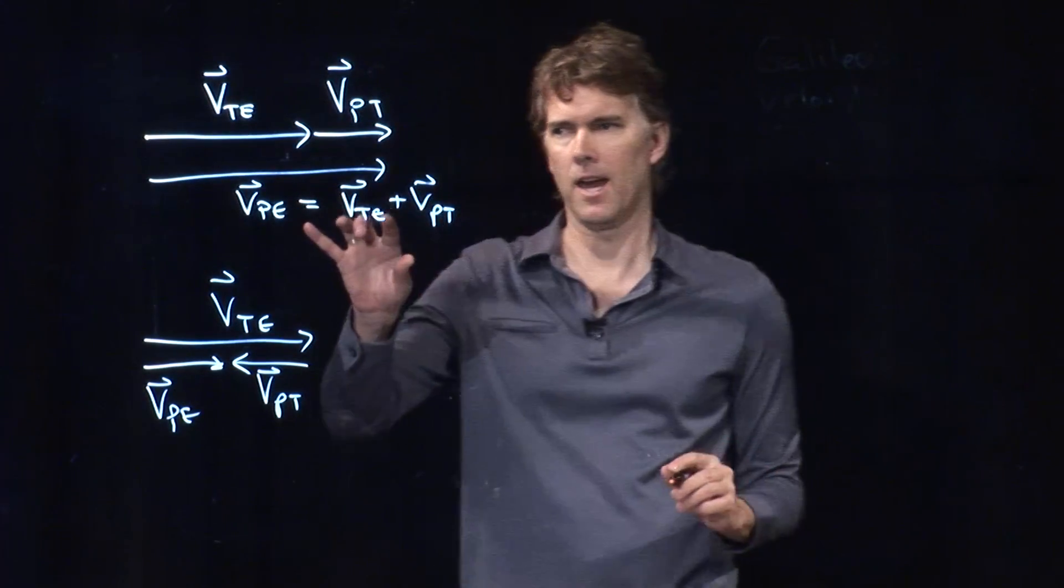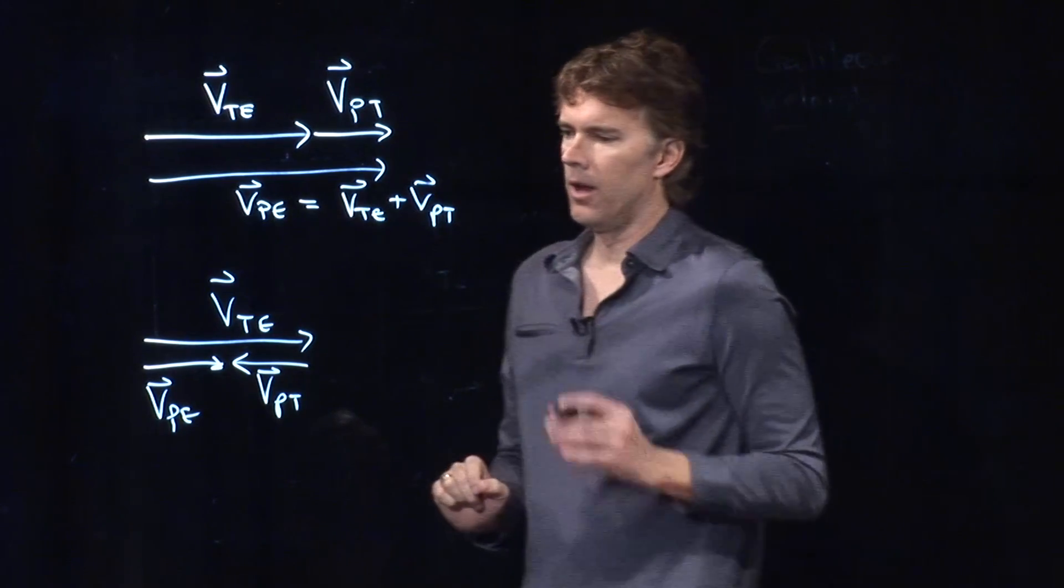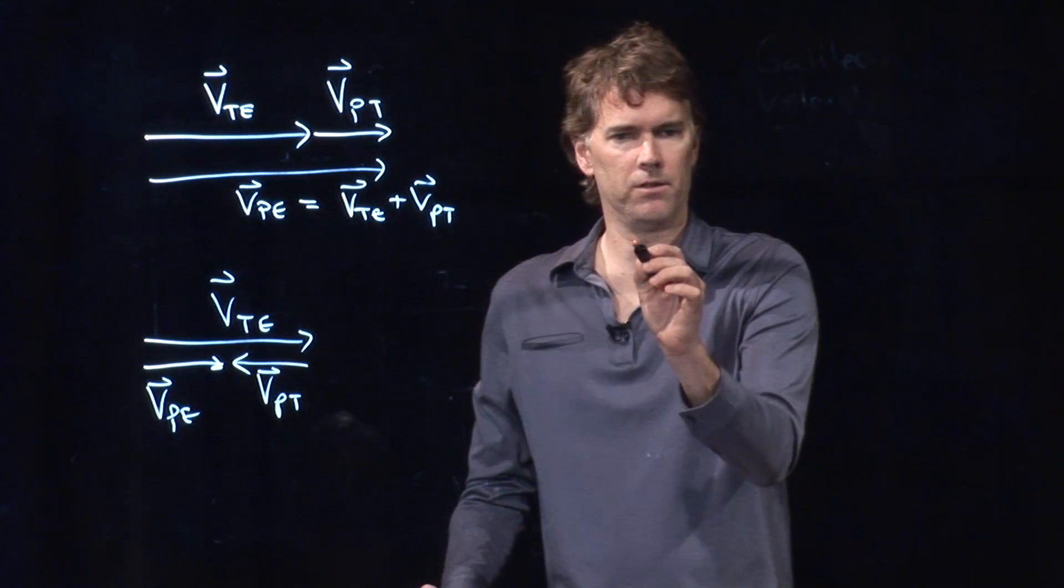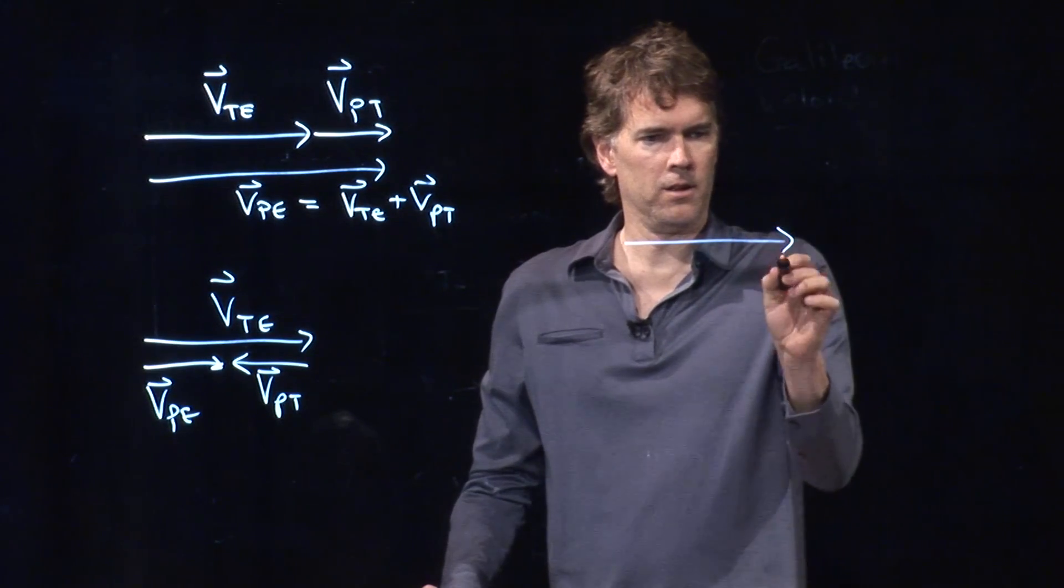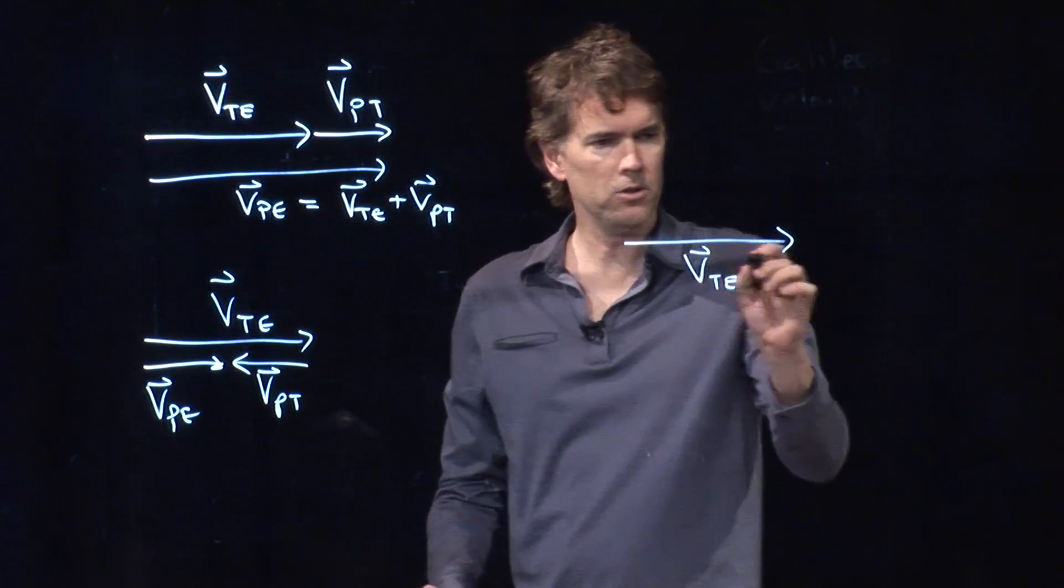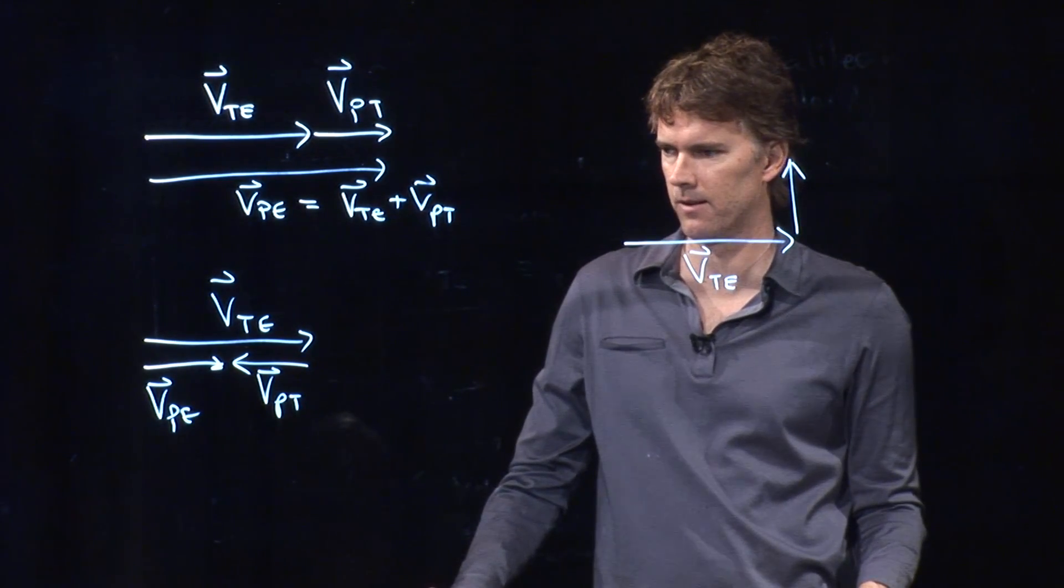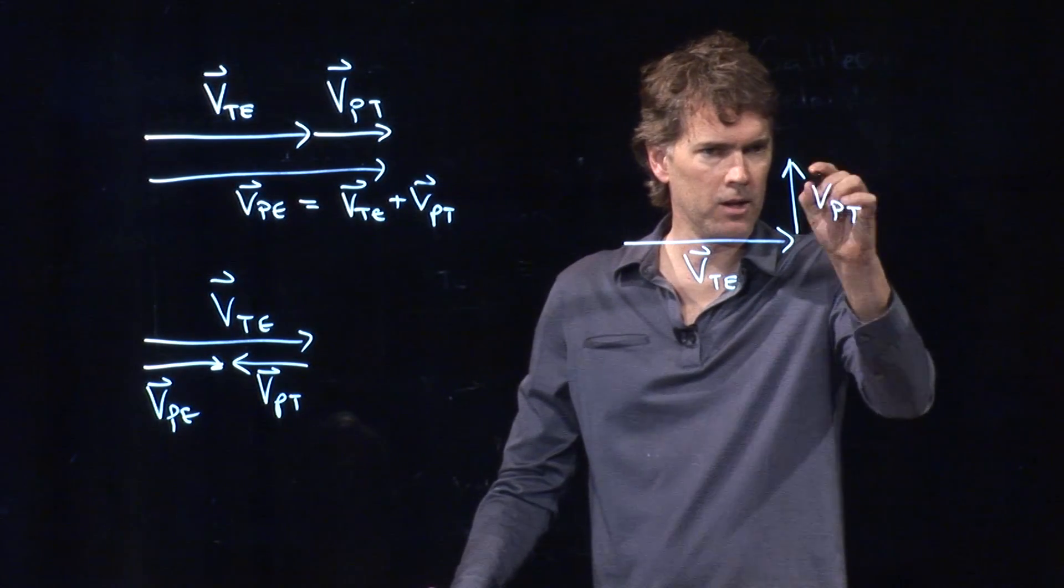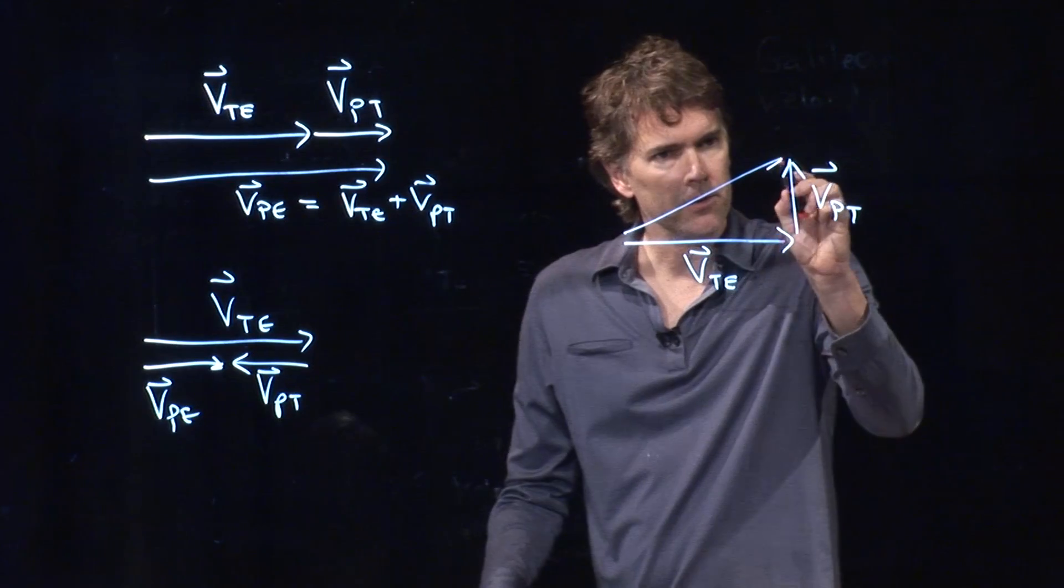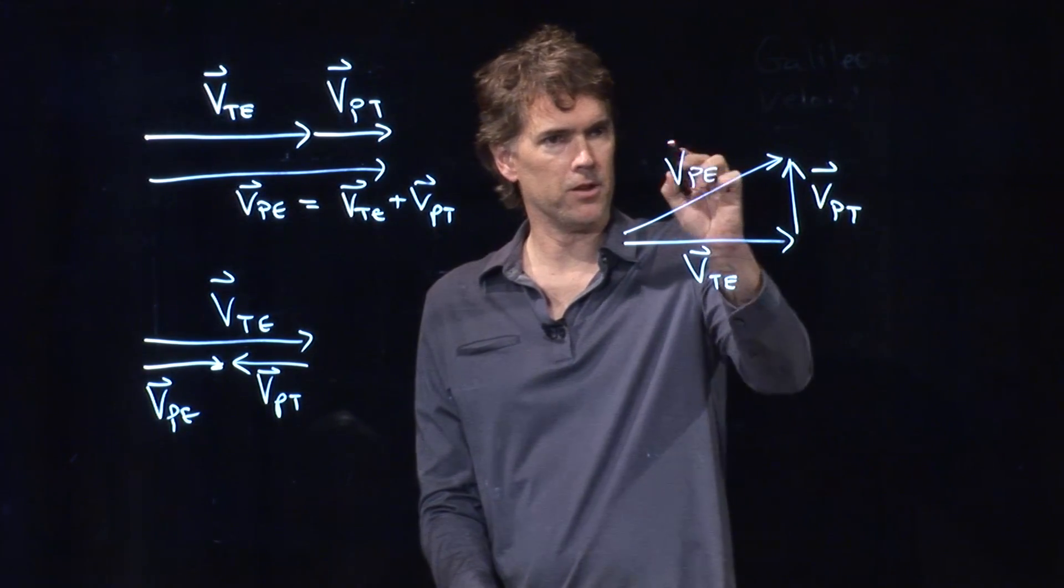And so in that case we're going to get 40 MPH, and in this case we're going to get 20 MPH, but of course we don't have to add those vectors in the same direction. You could be walking sideways relative to the train, and so this would be the person relative to the train, and therefore the sum of those two is right there. This is the person relative to the Earth.